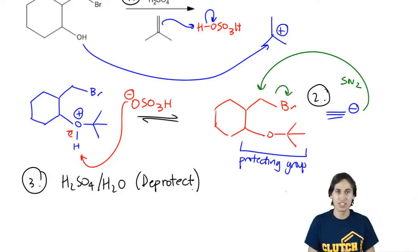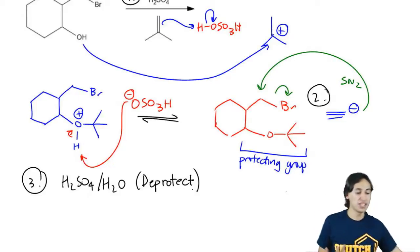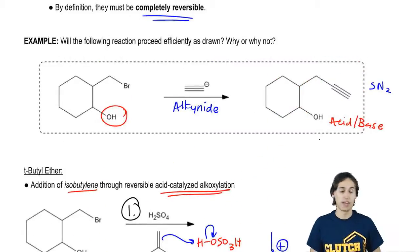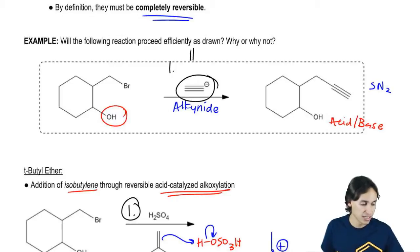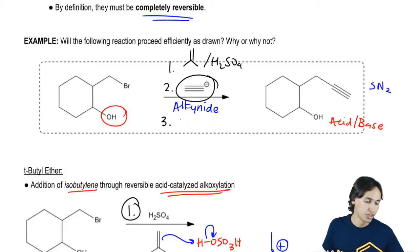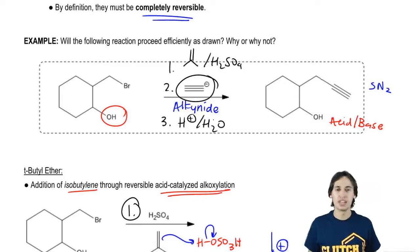For the purposes of your test, you will need to know when you have to use a protecting group and when you don't. In terms of synthesis, your professor could ask you, hey, how do I make this final product? And just using that one reagent wouldn't be enough. You would need to use first, you need to protect. Second, you could use your alkynide. And then third, you would have to deprotect using acid and water. So I hope that made sense, guys. Let me know if you have any questions. If not, let's go ahead and move to the next topic. Thank you.